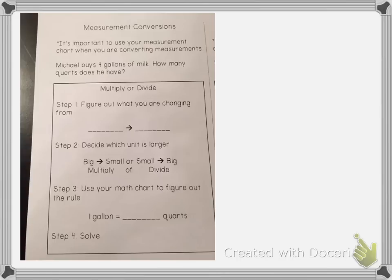So we still have the same first step. We have to figure out what we're changing from. He buys four gallons so we're starting out at gallons and the question asks how many quarts does he have?